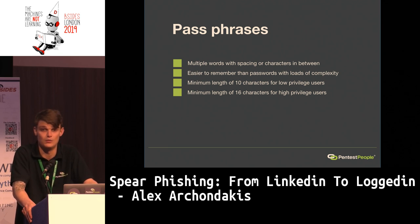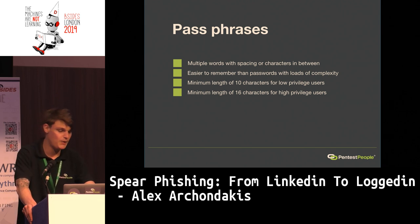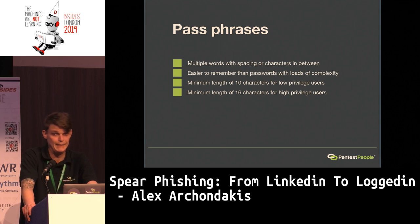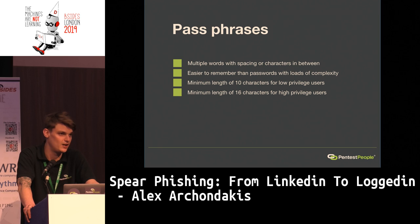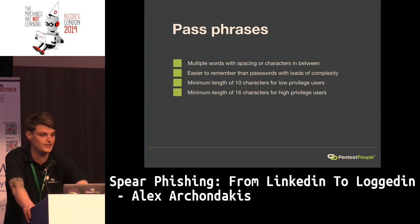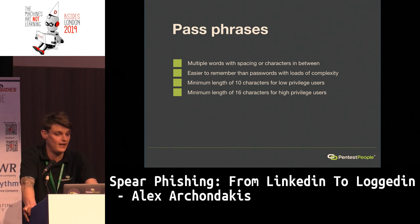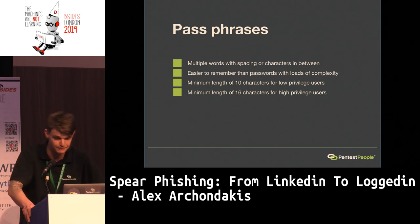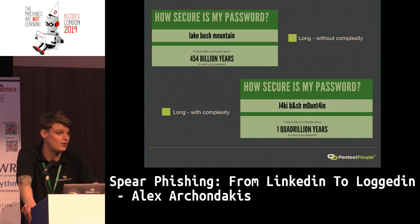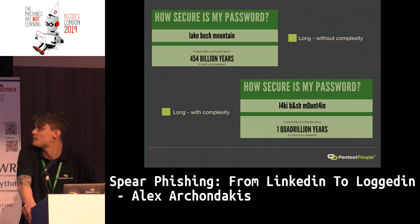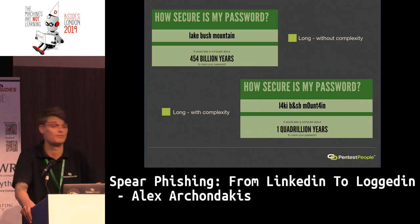Passphrases — multiple words with spaces in between — are a lot easier for the human brain to remember, because remembering three words with spaces or dashes is much easier than one word with seven hashtags, four semicolons, and a couple of commas. A minimum length of 10 characters should be in place for low-privileged users, and 16 characters for high-privileged users. A passphrase example can go from 'cracked instantly' all the way to 454 billion years to crack. Adding some complexity on top makes it even stronger.